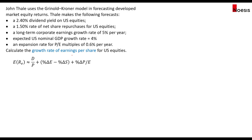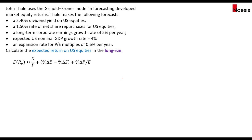If you are asked to calculate the growth rate of earnings per share, that would be the term in the bracket: the percentage change in earnings minus the percentage change in number of shares outstanding. This will be 5% minus negative 1.5%, so that's 6.5%.